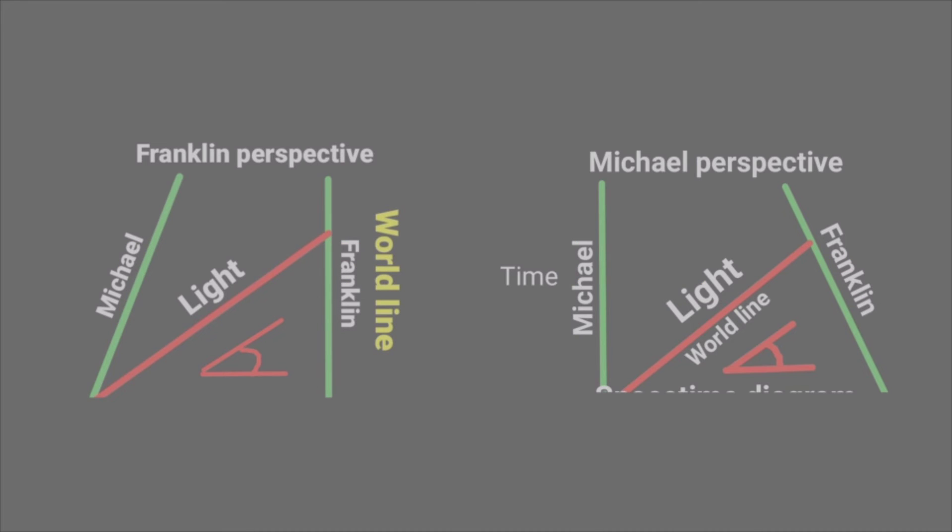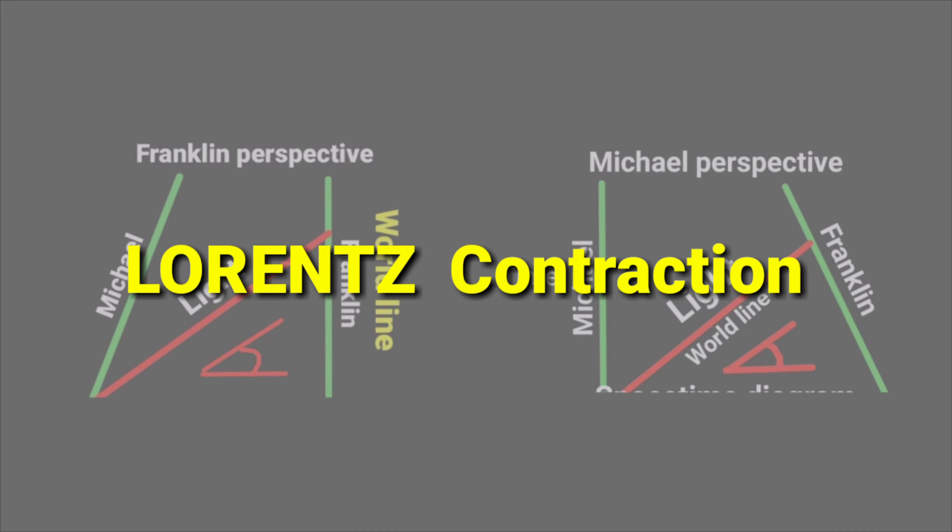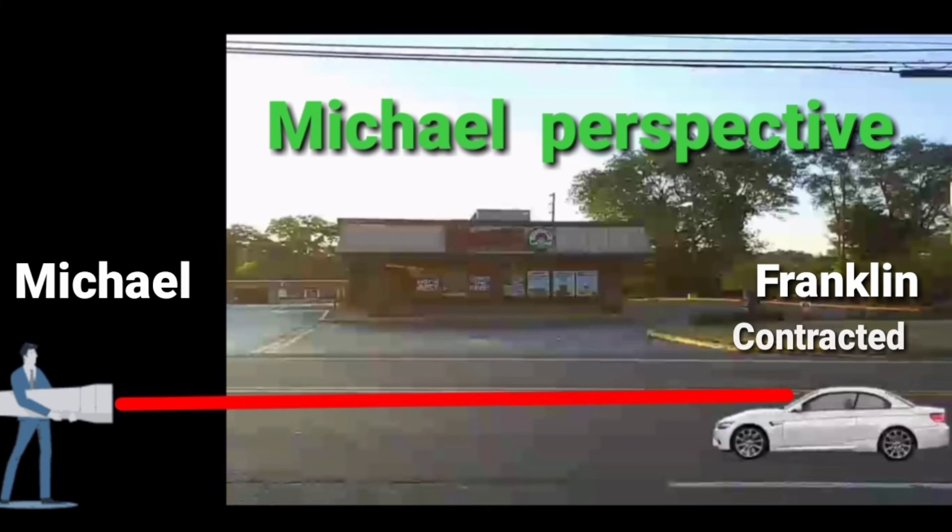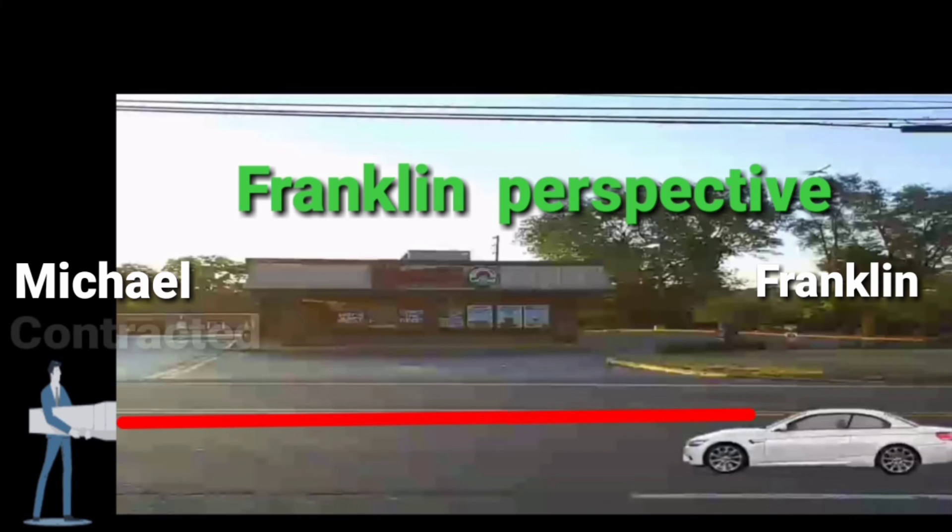The specific squishing is called Lorentz contraction. Like from Michael's perspective, Franklin appears contracted. And from Franklin's perspective, Michael appears contracted.